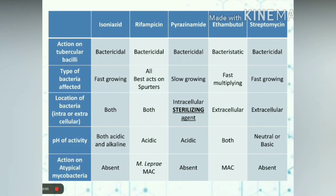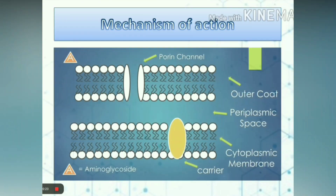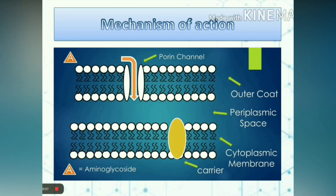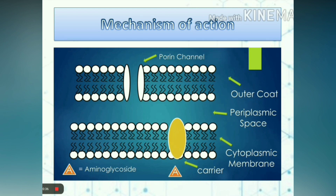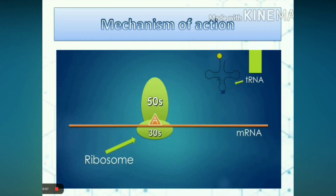The next drug is streptomycin. Streptomycin is bactericidal and acts on fast-growing, extracellular bacteria. It is active at neutral or basic pH — we will see later why it is not active at acidic pH. Action on atypical mycobacteria is absent. Mechanism of action: streptomycin diffuses passively across the outer membrane via porin channels, and is then actively transported across the cell membrane into the cytoplasm by an oxygen-dependent process. This active process is coupled with a proton pump which transfers hydrogen from inside to outside. Therefore, if there is an acidic medium outside the bacteria, transport of streptomycin will stop. Once inside the bacteria, it binds irreversibly to the 30S subunit of the ribosome, specifically the S12 protein. This interferes with binding of the 30S and 50S ribosome to the mRNA, interrupting binding of tRNA to the mRNA and inhibiting formation of the initiation complex.